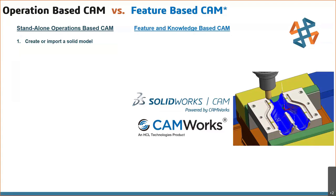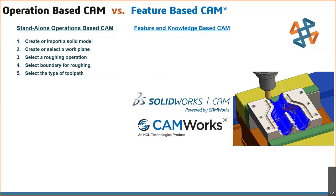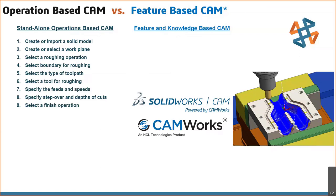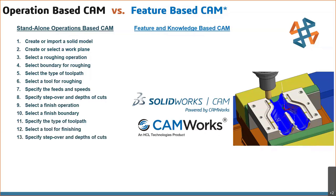This typical workflow — because it's always about process — starts with creating or importing a solid model, so you're programming outside of SOLIDWORKS. Then you're selecting a work plane, selecting a roughing operation, doing a boundary for the roughing, choosing the type of toolpath and strategy — adaptive, 2D adaptive, whatever you're doing — picking your tool, specifying feeds and speeds, step-over and depth of cuts. Then selecting a finish operation, either copying from one that exists or creating a new one: finish boundary, type of toolpath, type of finish, depth of cuts, tool, and feeds and speeds. Then you repeat this for another pocket.